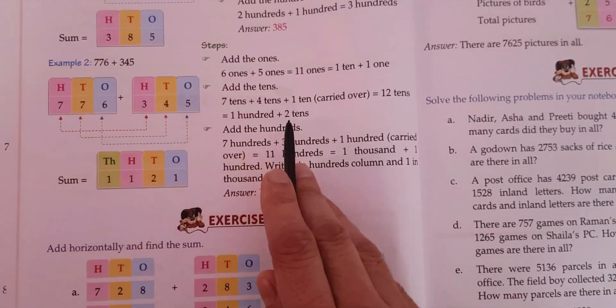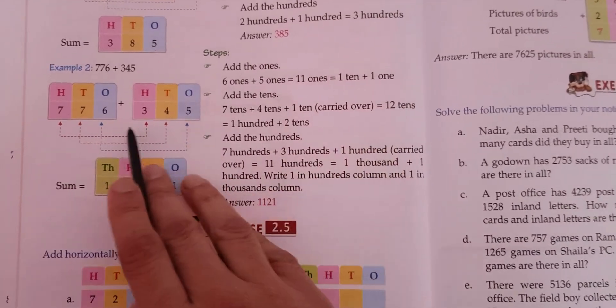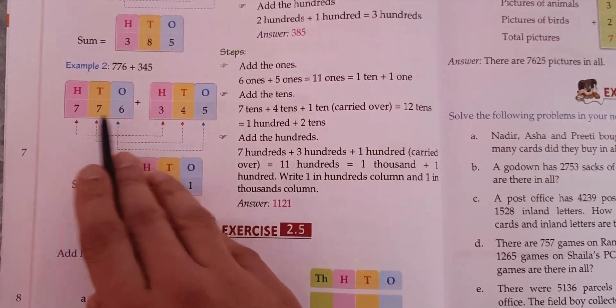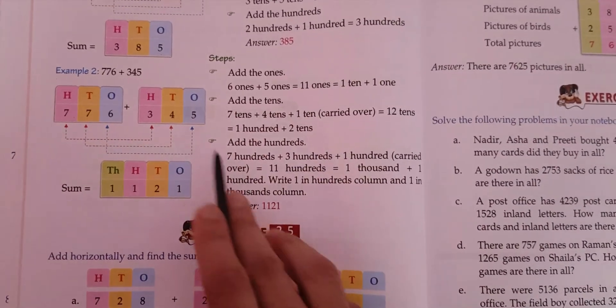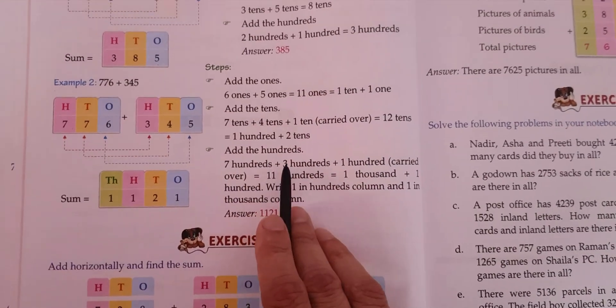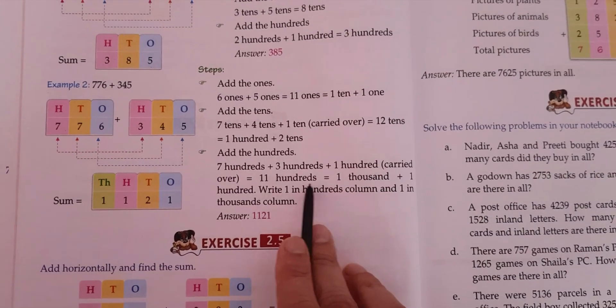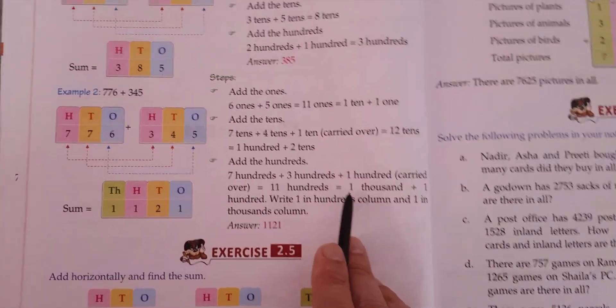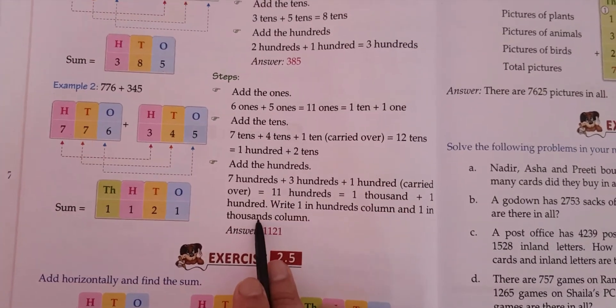Okay, so again we'll add the hundreds. Seven hundred plus three hundred plus one hundred that has been carried over from tens place. So this will become seven plus three, ten. Ten plus one is eleven. So eleven hundreds, that means it will become one thousand plus one hundred.